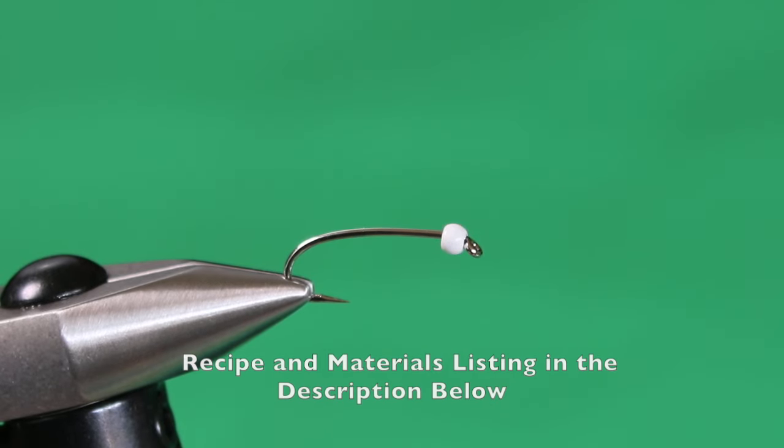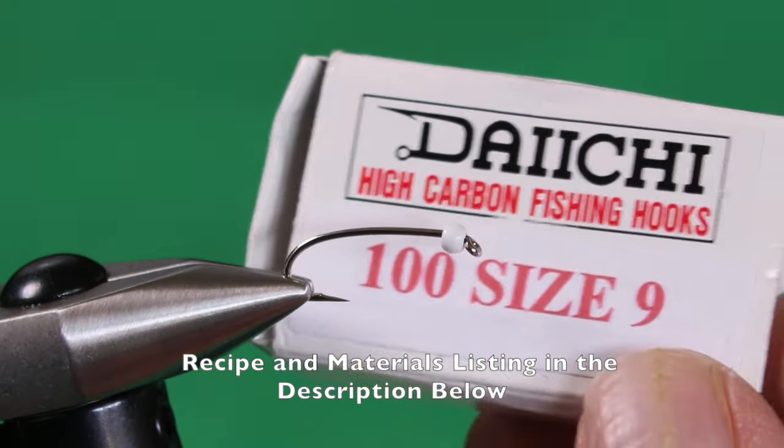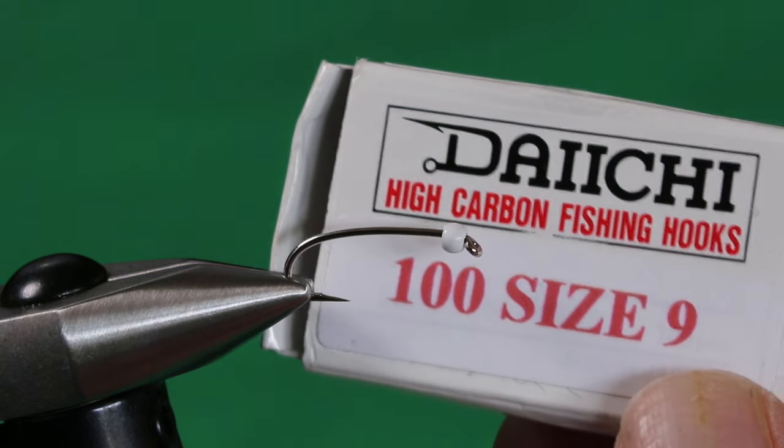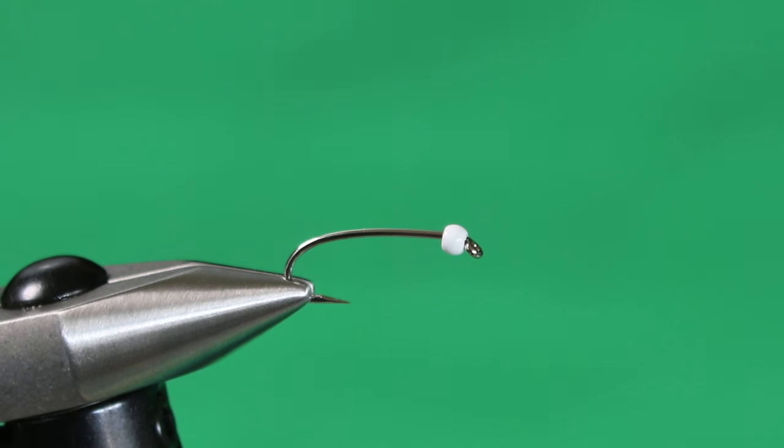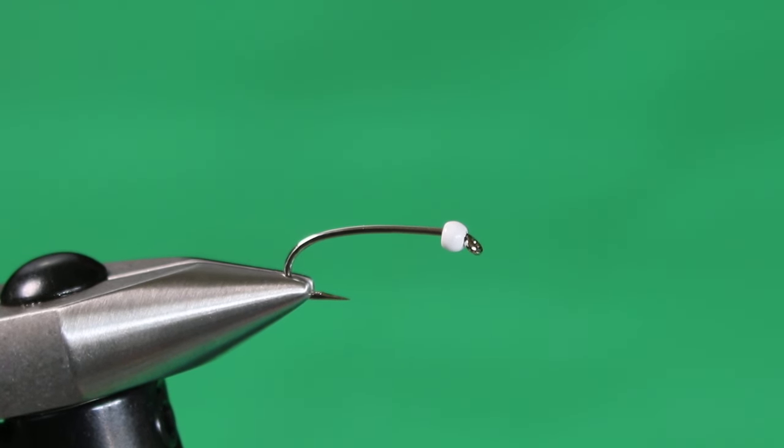So let's tie the deep blue sea. In the jaws of the vise, I've got a size 9 Alec Jackson silver covered hook. This is equivalent to a size 10. I'd probably tie this in the 9 and 7/64, and the 11, which would be equivalent to a 12. This is a large attractor style fly, bomber imitation, designed to be fished deep.